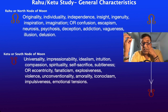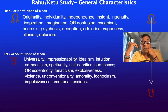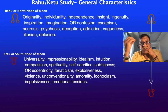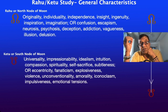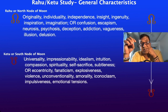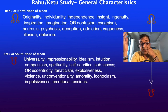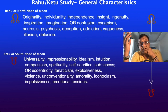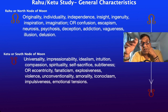Ketu, the guy with only the body and no head, gives us the feeling of universality, impressionability, idealism, intuition, compassion, spirituality, self-sacrifice, and subtleness on the positive side. On the downside, it can lead to eccentricity, fanaticism, explosiveness, violence, unconventionality, amorality, iconoclasm, impulsiveness, and emotional tensions.